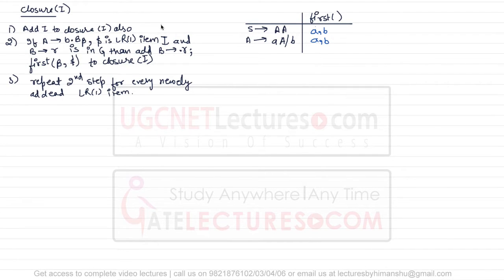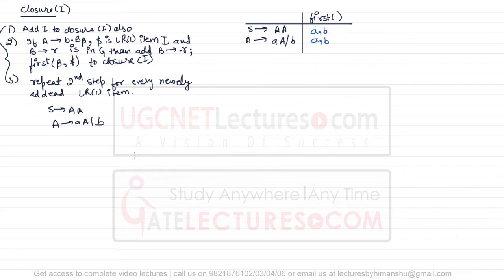Let us see how to create this DFA for LALR and CLR parsers. I've written how to find the closure, and according to this closure we'll also draw the DFA. The grammar is S derives AA and A derives AA slash B. I'm trying to keep the grammar standardized and common for all the parsers so that we'll be able to understand the difference between these parsers and their parsing algorithms. Initially we are going to read I-naught, the initial state, and for that we have to make the augmented grammar: S' derives S, S derives AA, A derives AA slash B.